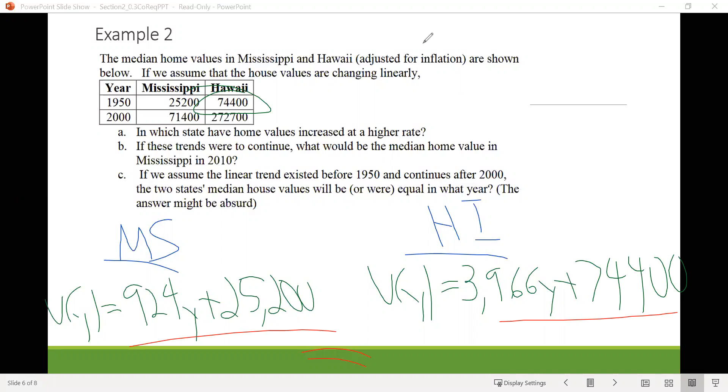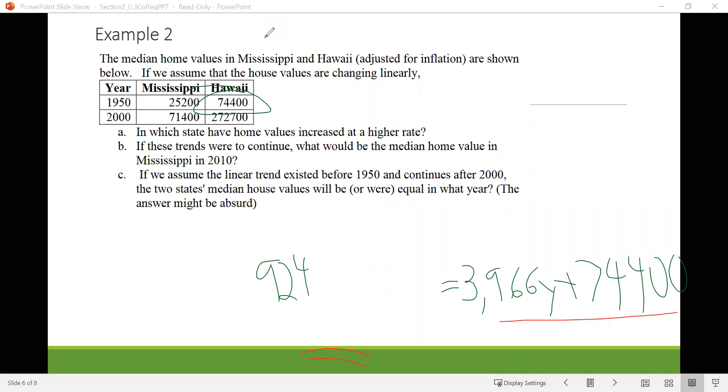So now we have our two equations. And we know to figure out when they're the same, we're going to set them equal to one another. So we're going to have 924Y plus 25,200 equals 3966Y plus 74,400. And we'll solve that. I'm not going to do it all the way out right now because I know you guys can figure this out. And let's see, when we work this out, we end up with Y equals negative 16.173. And let's also remember the units there are years.